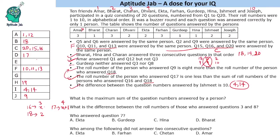Now we are left with just a few unfilled values. The remaining question numbers not yet assigned are: 2, 3, 5, 6, 7, and 8. We still need to assign these to the remaining people.